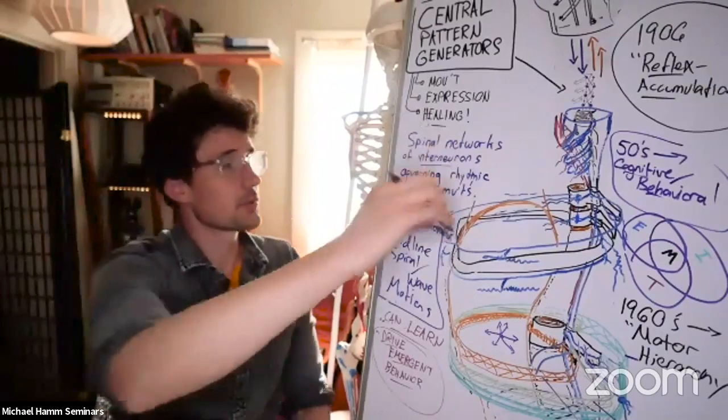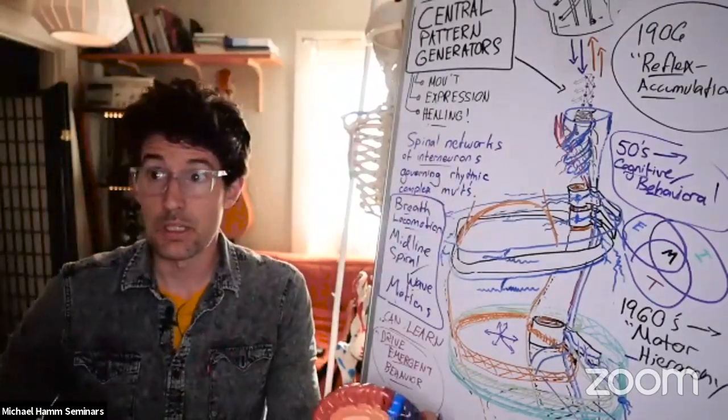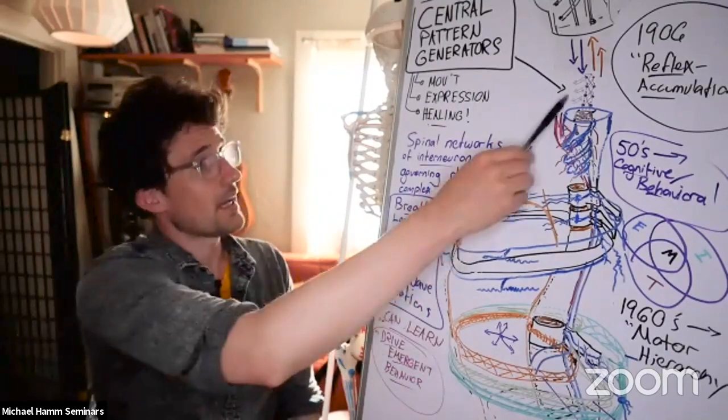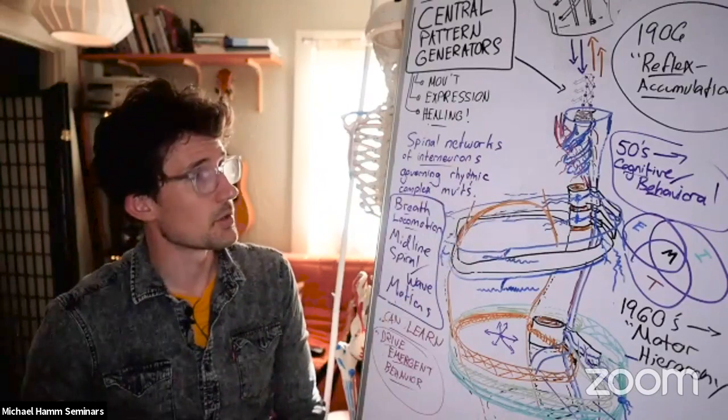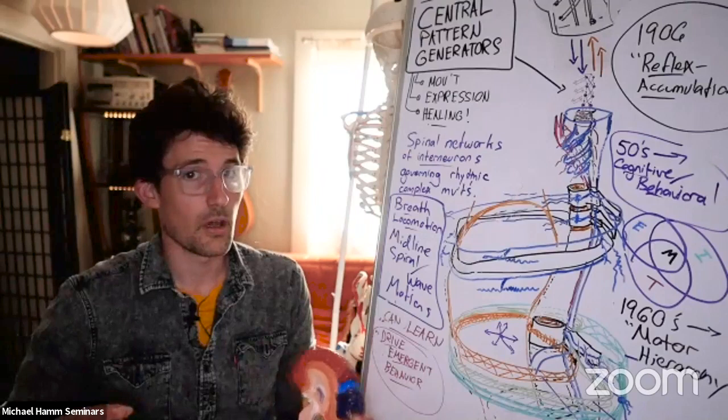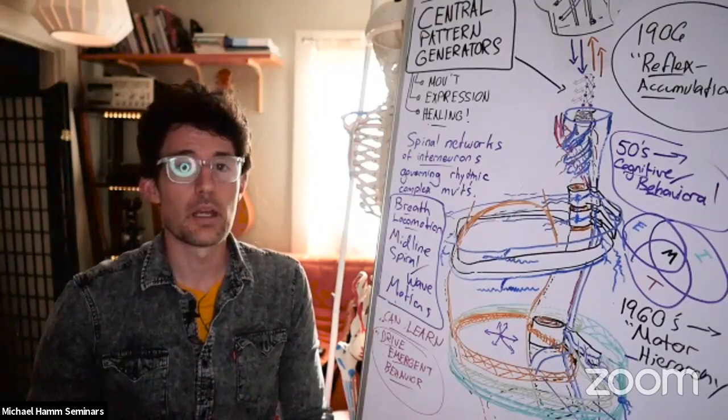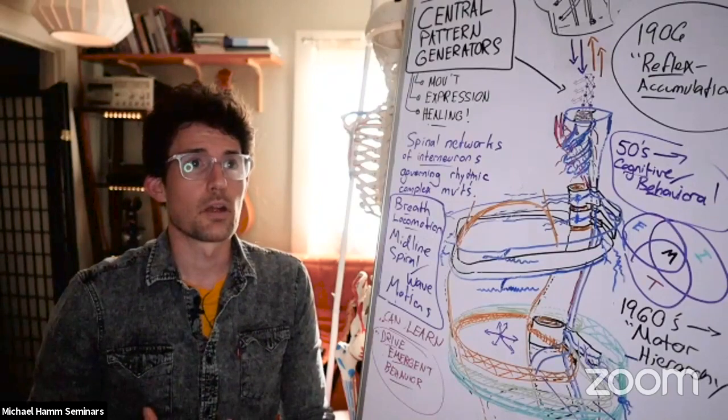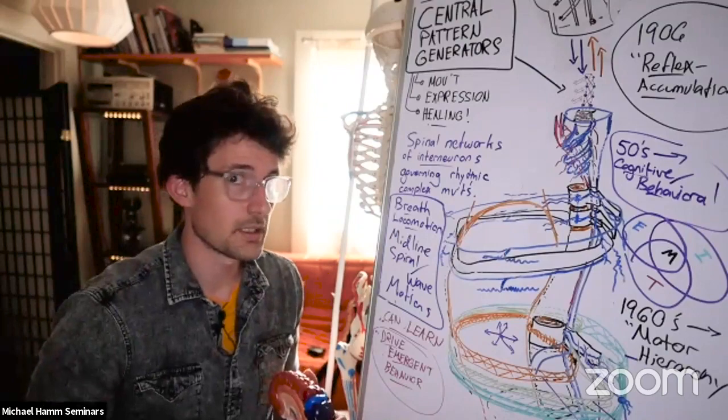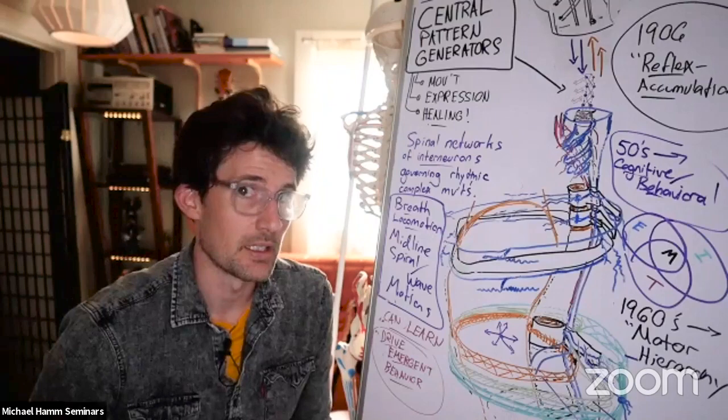So central pattern generators are a level below that. It's not external context that these CPGs are primarily acting with regard to. CPGs are making decisions about movement and autonomic regulation that have to do with the context of the body. What position is your body in? What rhythm is your body in? What autonomic state is your body in?